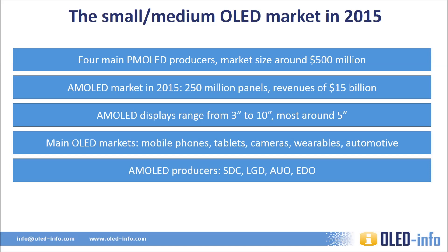There are four AMOLED producers today. Samsung Display makes the vast majority of AMOLED panels — more than 90% of all OLEDs are made by Samsung Display. LG Display produces flexible OLEDs, for example the one used in Apple's watch, and also OLED TVs, while AU Optronics and EverDisplay both produce AMOLED displays commercially but in limited capacity. Most of Samsung's AMOLEDs are sold under the Super AMOLED brand, which integrates a touch panel into the display.